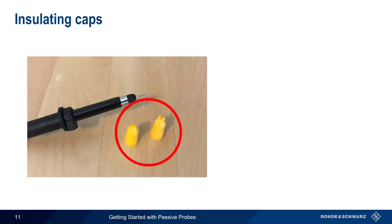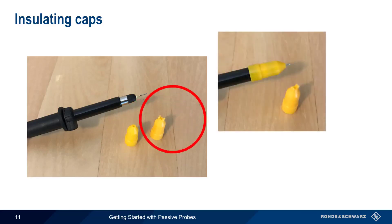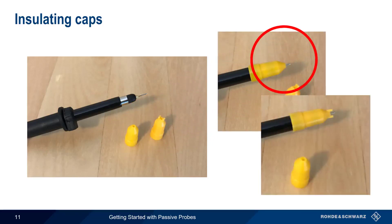Insulating caps are useful when we're probing in crowded areas and want to avoid inadvertently making contact with nearby components, pins, or traces. The insulating caps also protect against short circuits by covering up the metallic ground ring near the probe tip. There are two basic types of insulating caps. The first is the standard protective cap. The second is the IC, or integrated circuit cap, which makes it easier to probe a single pin on a chip or a similar component. Both are simply pushed over the probe tip.